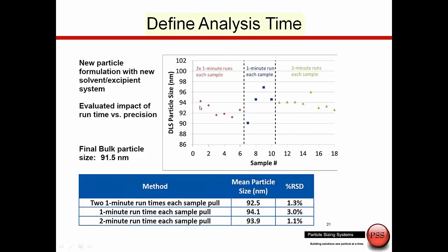The first thing we looked at upon installation was how long to perform the measurements. For narrow distributions you can do quick measurements; for broader distributions you have to take your time. We looked at the effect of taking two one-minute runs and averaging, then one-minute runs alone, then two-minute runs. The decision was based on percent RSD — standard deviation divided by the mean, normalized and multiplied by 100. What we saw is that for the two-minute runs we had the lowest RSD, so we decided for this process we'll take measurements every two minutes.